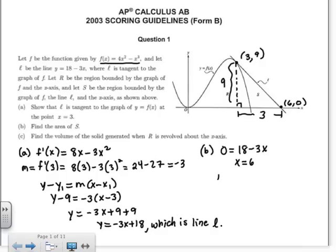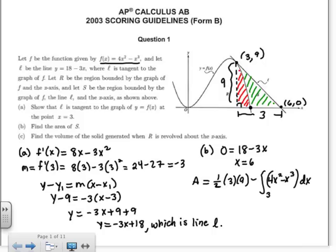So I have 1/2 base times height. That's the area of the triangle. And I'm just trying to find the area of S. So I want to subtract out this red region here. That region can be found by integrating from 3 to this point here. So I need to find that as well. And it's going to be the top curve minus the bottom. So my top curve was that 4x² - x³. And the bottom is just 0. So basically I need to find this point here. So if I'm going to find that point, it's where f(x) = 0. So it's where my y value is 0. You can pull out an x². When you do that, you have 4 - x. So that point right there is 4. So that x value is 4. So I'm going from 3 to 4.